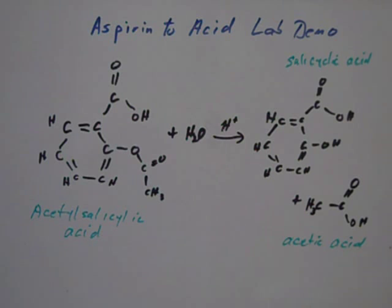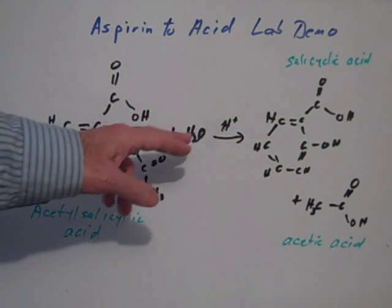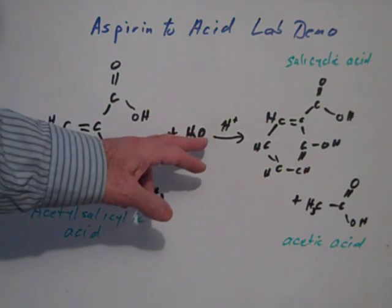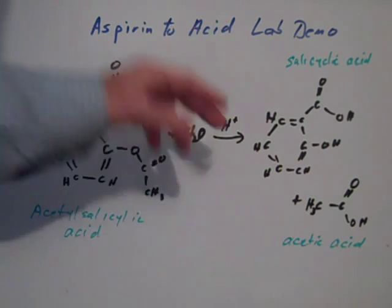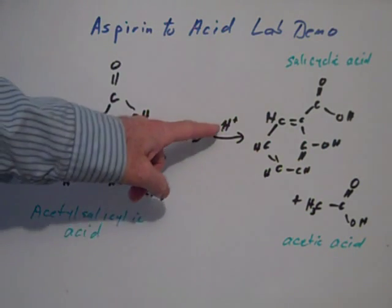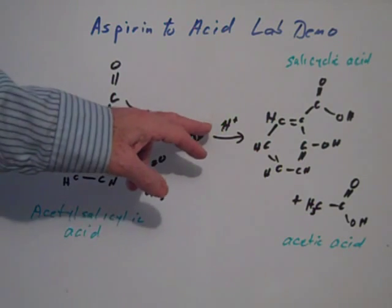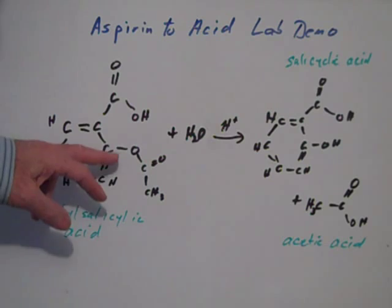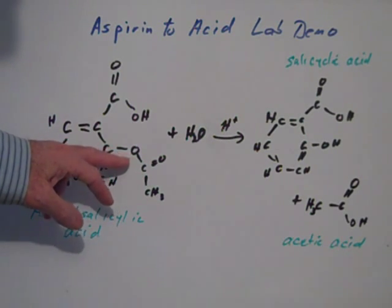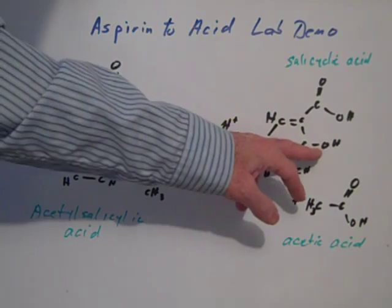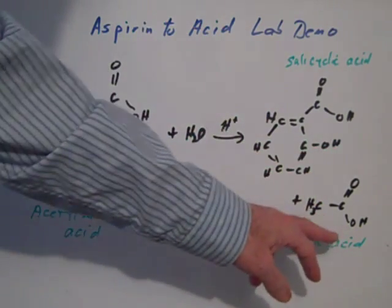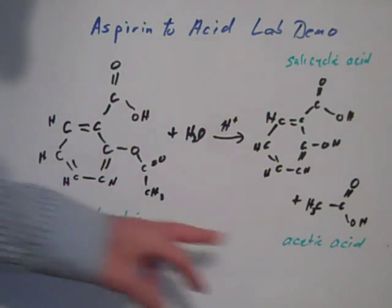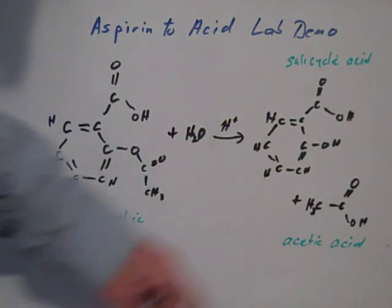Okay, we're about to do the aspirin to acid lab demo. What we do is take acetylsalicylic acid which has been extracted from aspirins, and we combine it with water that's been catalyzed with sulfuric acid—that's what that little H plus means. The water with the H plus attacks this oxygen, and we get salicylic acid here (OH and H here) and acetic acid which has an OH here as well from this acetate group. We're going to try sniffing it to see if we get a vinegary smell.